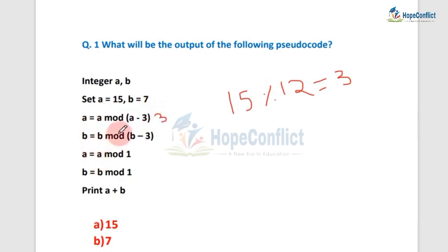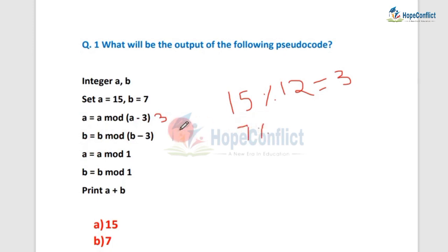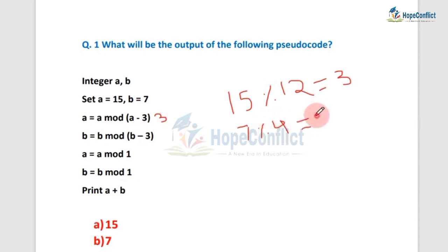Now what is the value of b? b is 7. b equals b mod (b minus 3), so 7 mod (7 minus 3) equals 7 mod 4. When we divide 7 by 4, the remainder will be 3. So the new value of b equals 3.